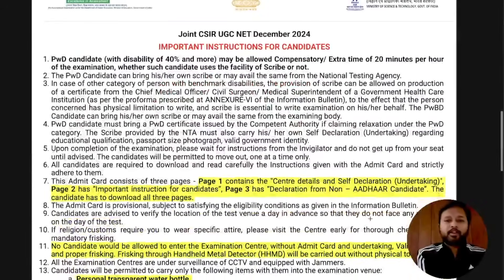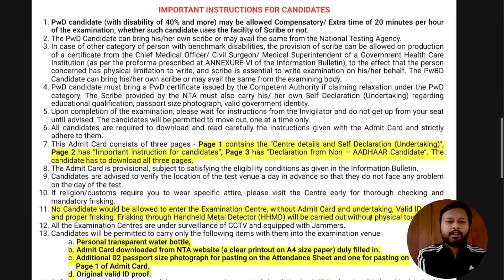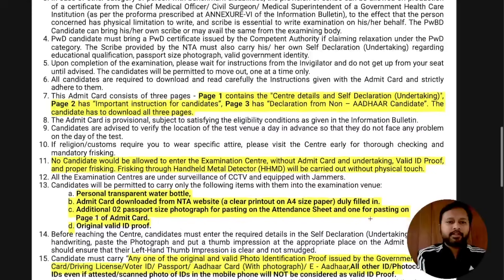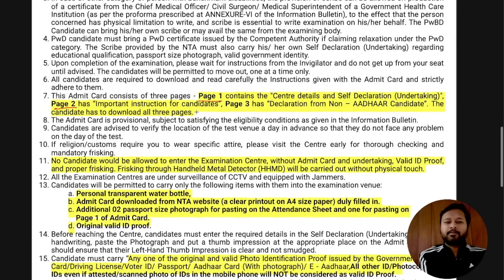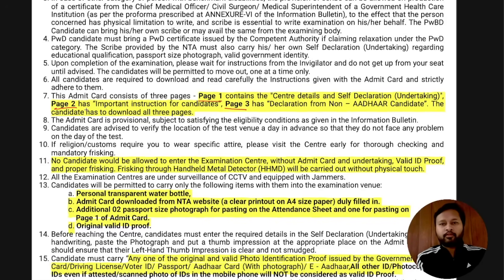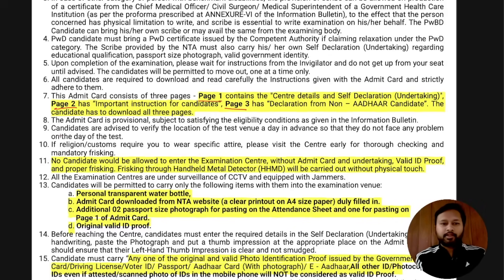The next part is important instructions. Your admit card consists of three pages: page one has center details, page two has important instructions, and page three has a declaration form for non-Aadhaar candidates. All three pages must be downloaded and brought to the examination center.